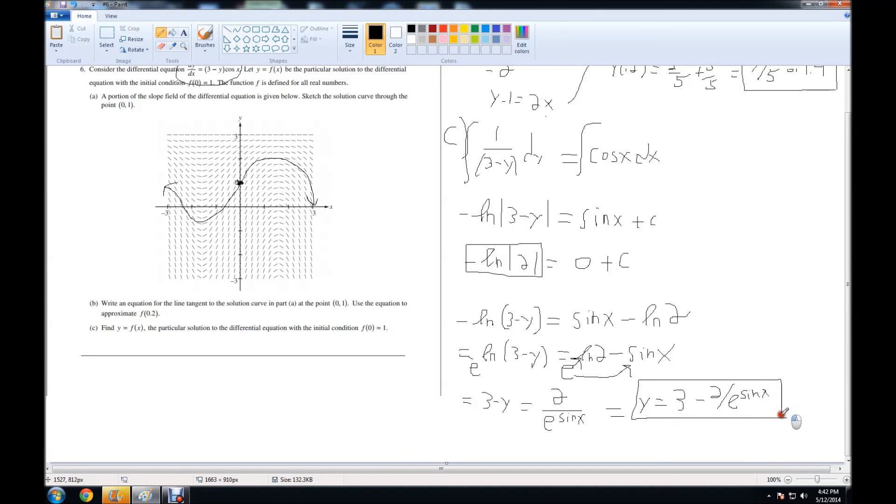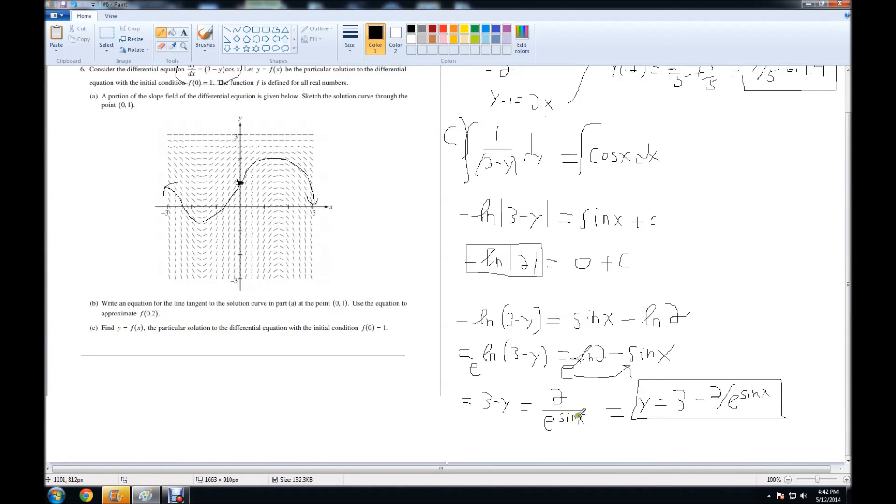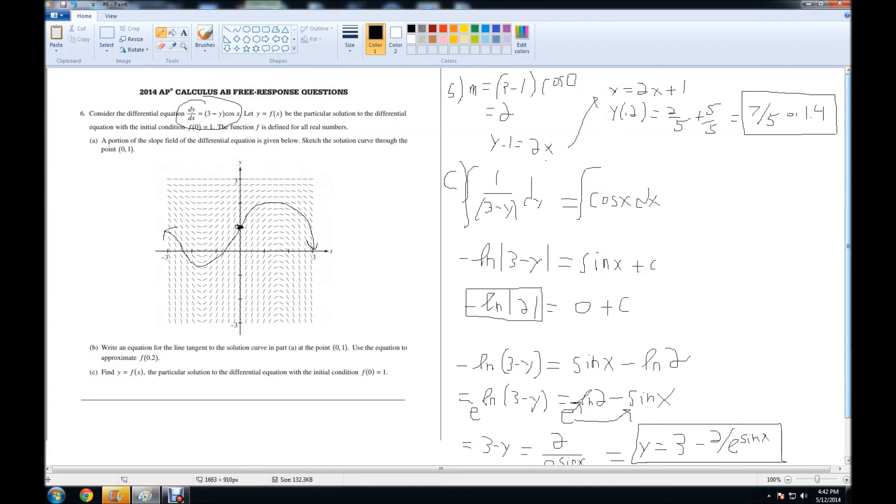As for our domain, we check the derivative, (3-y) and cos(x). These are all real numbers, and our final answer is all real numbers as well, because the denominator will never equal 0 because it's an exponent. So our final answer is y equals 3 minus 2/e^(sin(x)), and our domain would be negative infinity < x < positive infinity. That is the answer to part C and concludes question number 6. Thank you for watching.